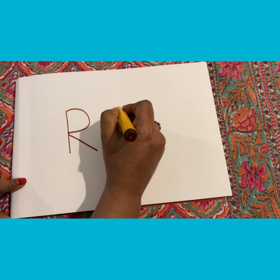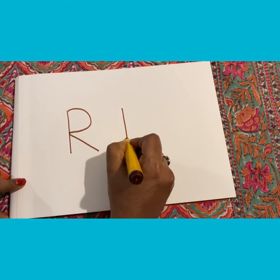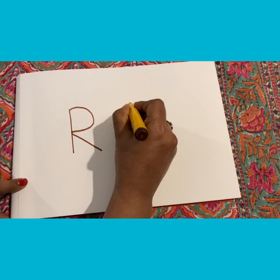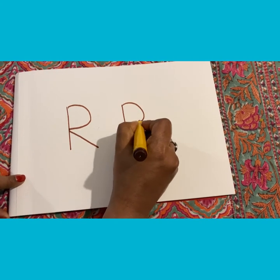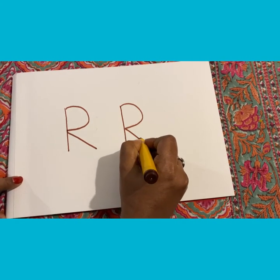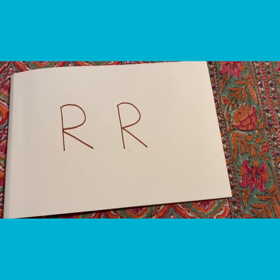And write one more time: standing line, a curve, and then a slanting line down — letter R.